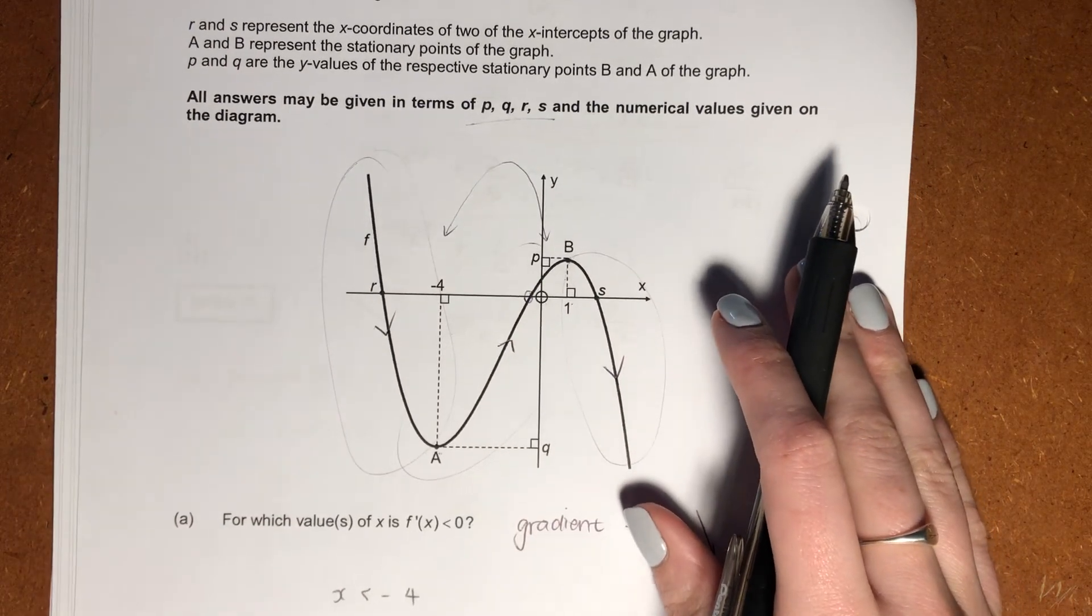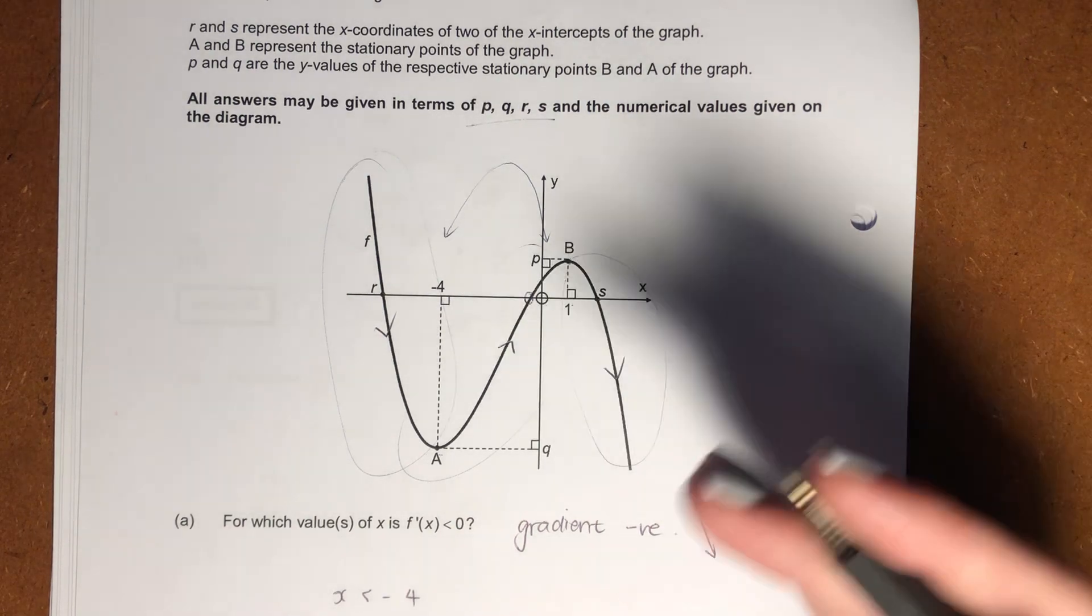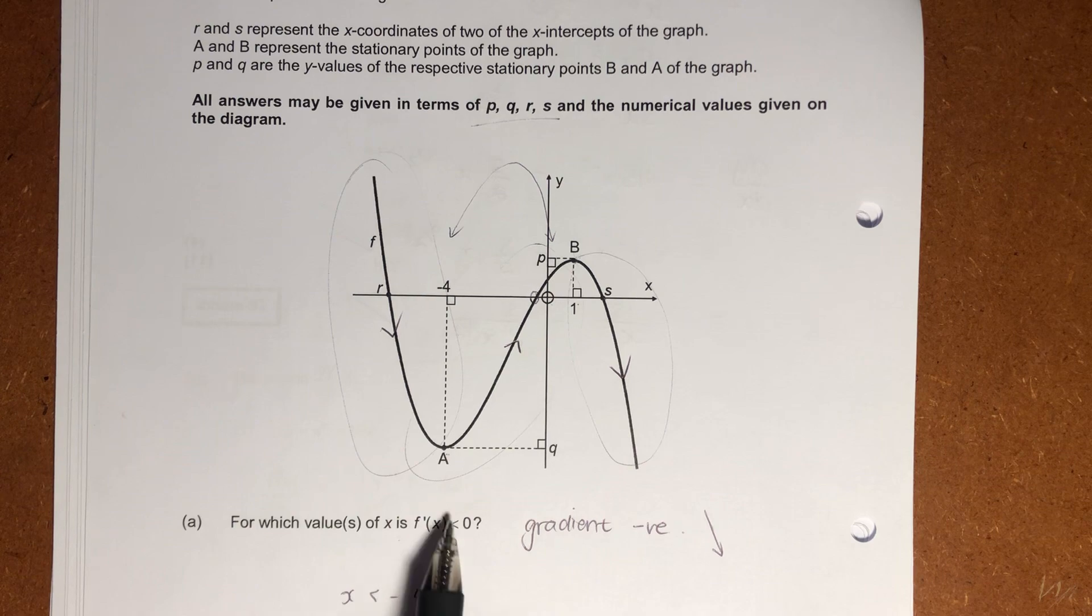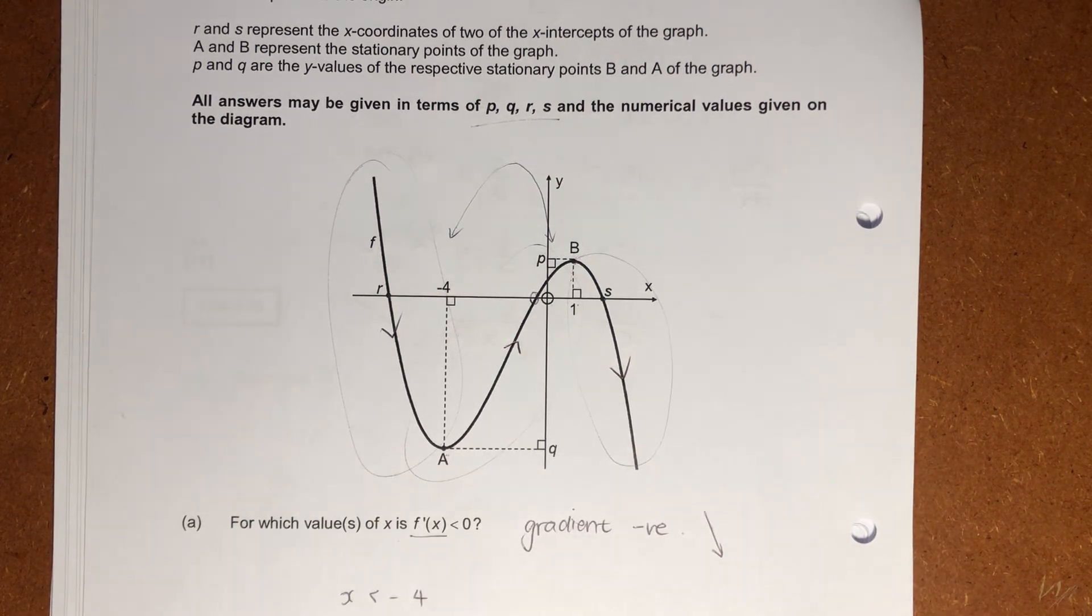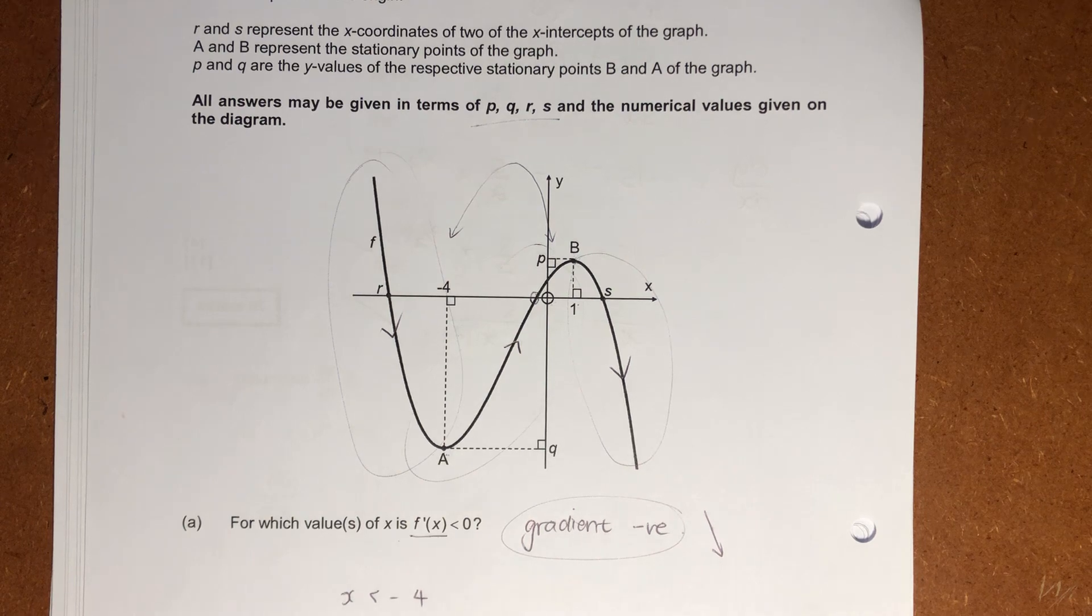Our first question is one that I think could cause anxiety for a lot of students, but let's talk through it. It says, for which values of x is f'(x), which is basically the gradient, less than 0. Translated into English, it's saying, where is the gradient of this graph negative?